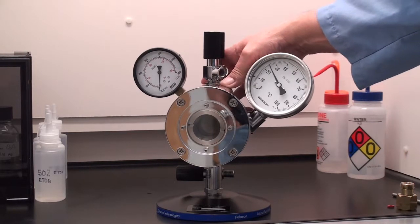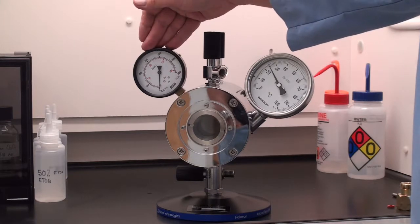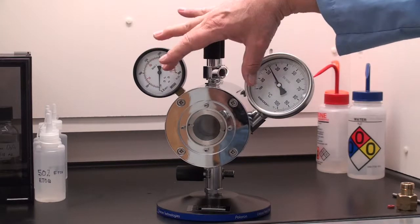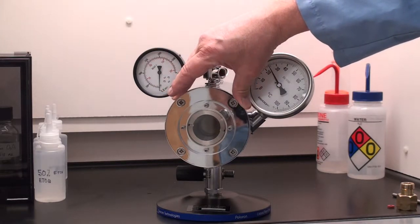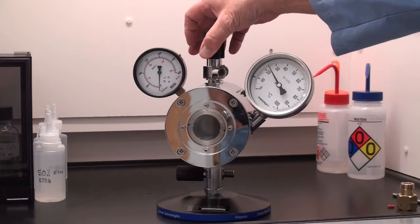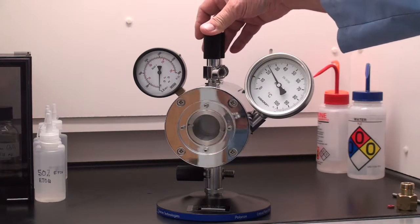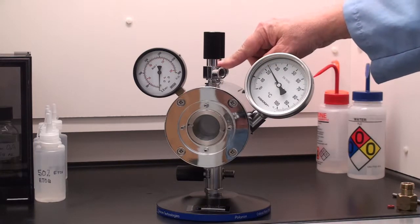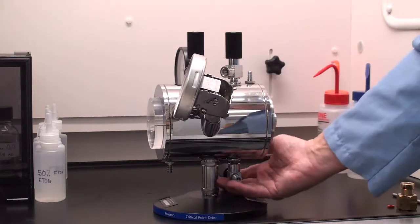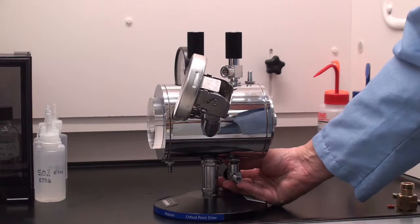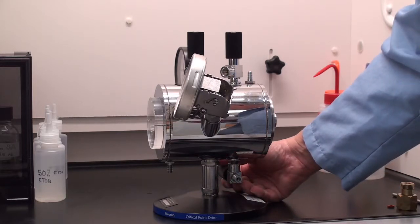Some of the other items you need to know about on the E-3100 is you have the pressure gauge which shows you the pressure inside the critical point drying chamber. You have two valves on top. One is CO2 in. One is CO2 out. And then you have another valve down here at the bottom which is the drain which you let out the intermediate fluid, typically ethanol, so you can get that purged out of the chamber.